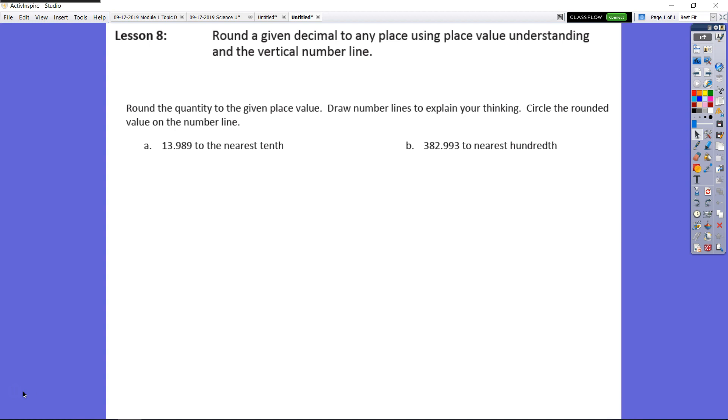We're going to round to the given place value. Here we're being asked to round to the nearest tenth and here we're rounding to the nearest hundredth. Of course we have the two different numbers so we have to take a look at how many tenths can we get out of this number here. And don't forget to circle your value on your number line which place value you're rounding to.